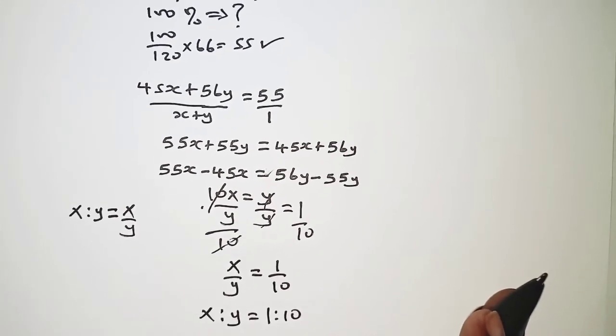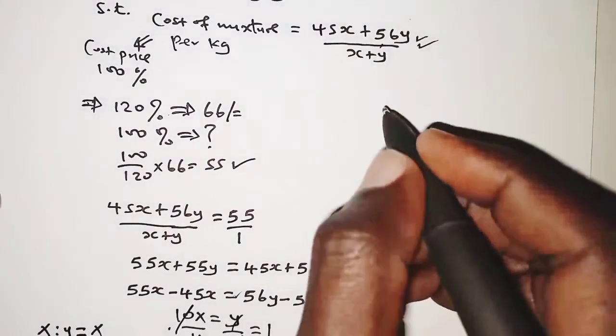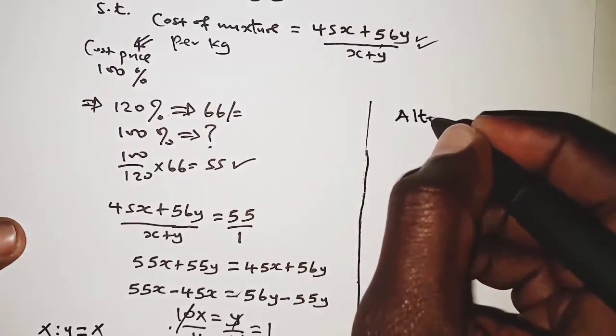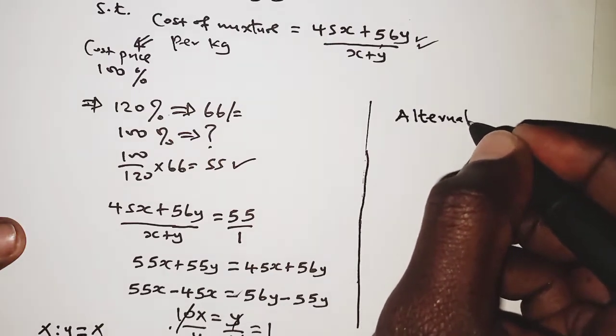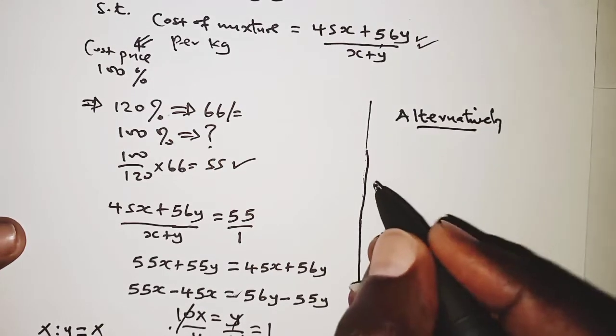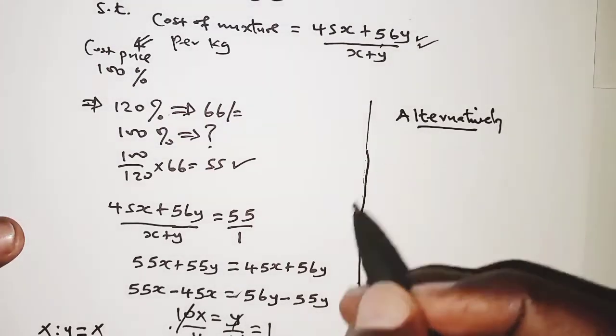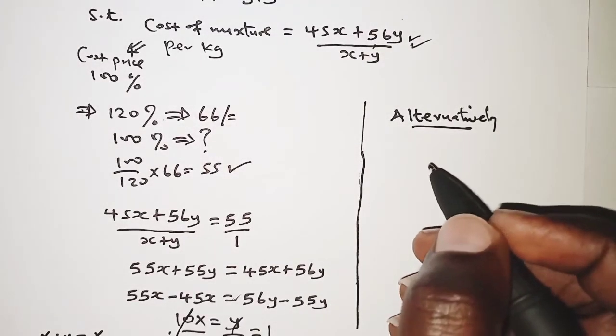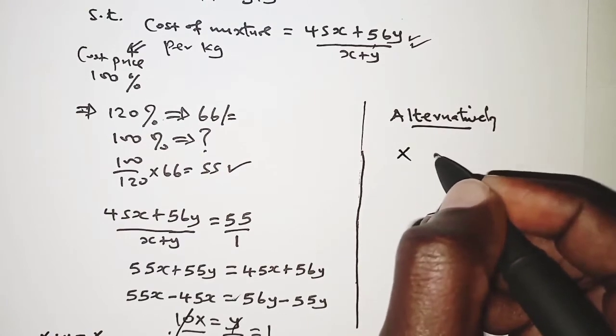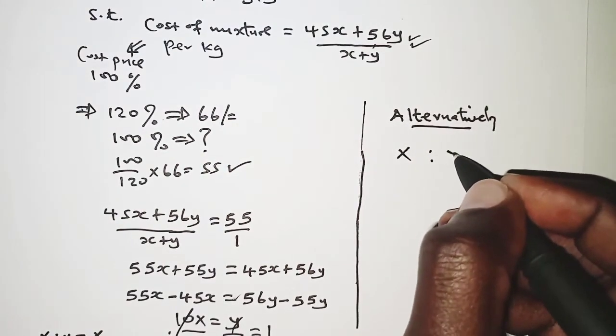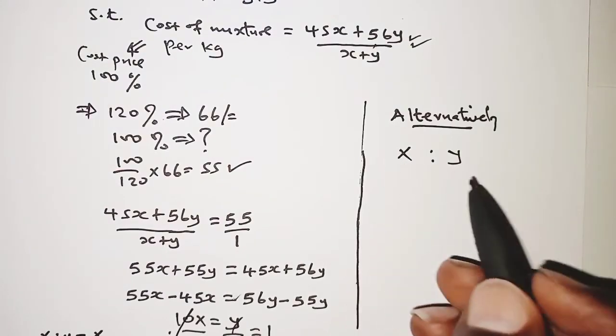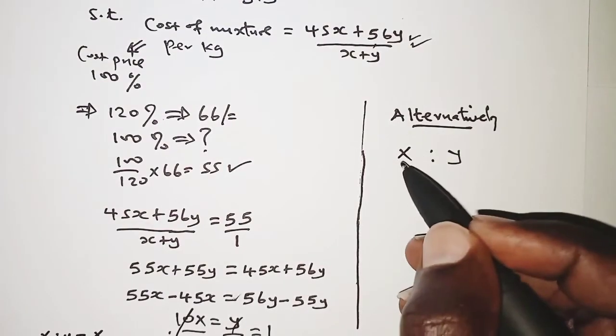An alternative way of doing this: Alternatively, we are going to use Pearson squares, which is also known as the cross method. So we are going to have maize mixed with millet in the ratio of x to y.